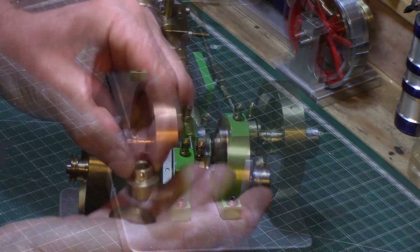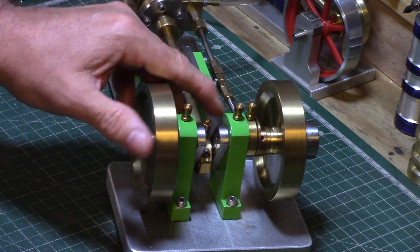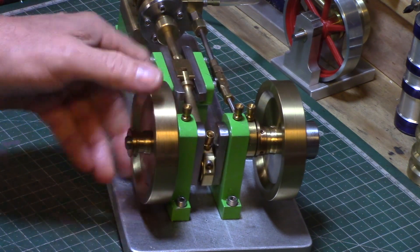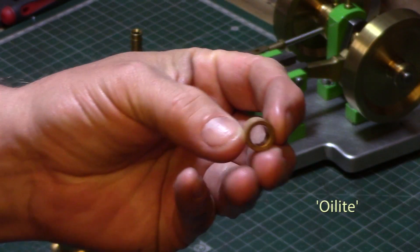The bearing supports were made from half inch aluminium plate and fitted with sintered bronze bearings known as oil light bearings.